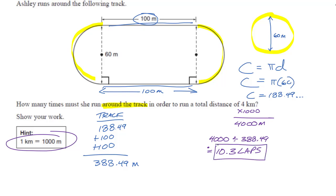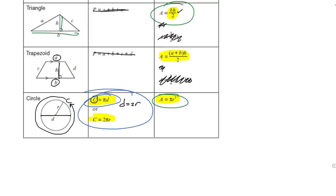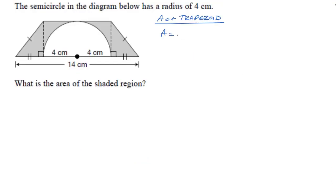Final example: a semicircle in the diagram has a radius of 4 centimeters — find the area of the shaded region. Without the circle, the shape is clearly a trapezoid. The trapezoid area formula is (a plus b) times h divided by two, where a is the top length and b is the bottom length.